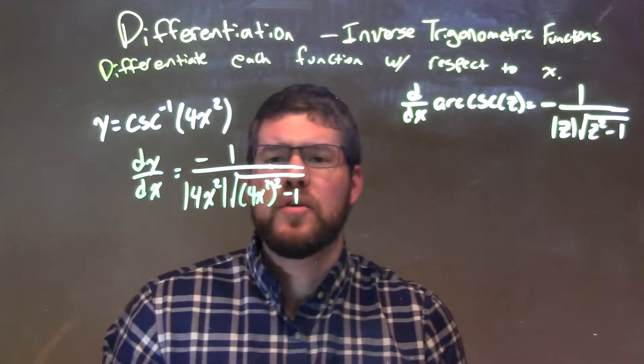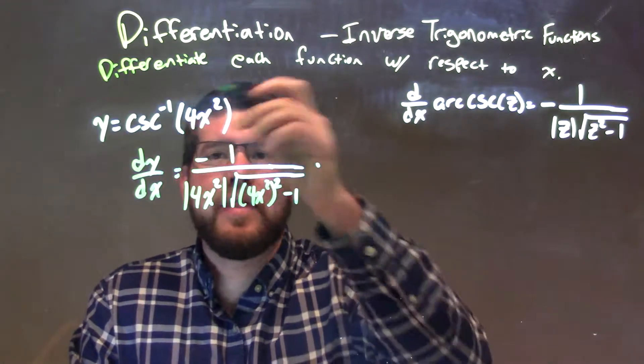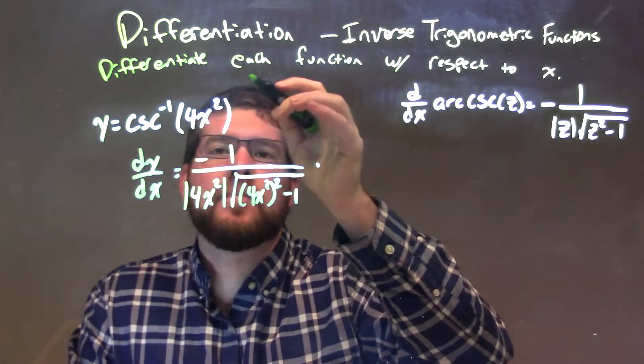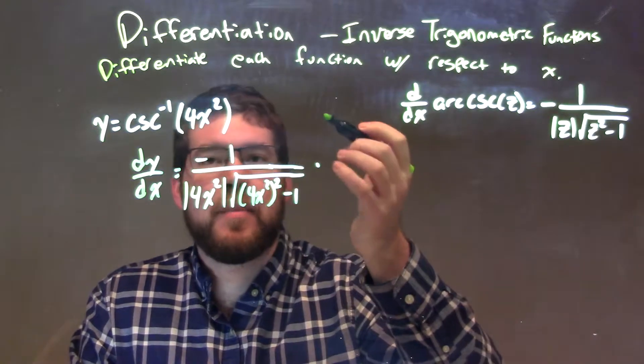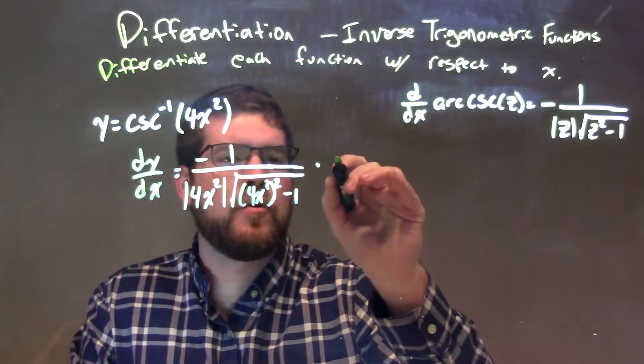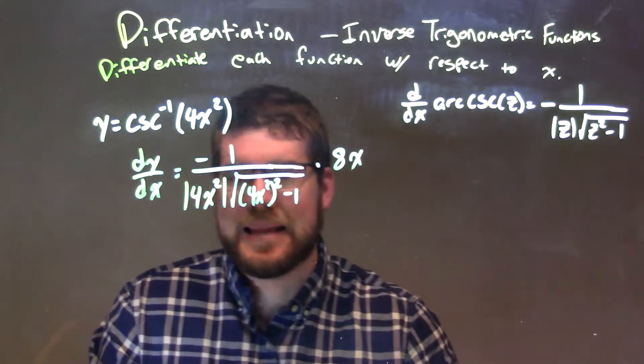Now, we still apply the chain rule and take the derivative of the inside, 4x squared. The derivative of that, power 2 comes down, multiply by 4, and then we have 8x.